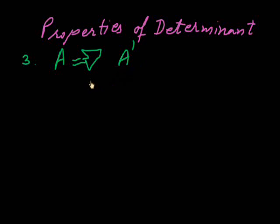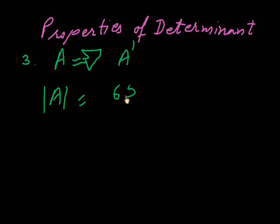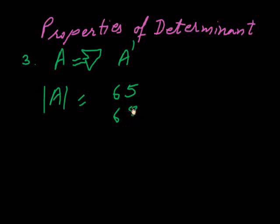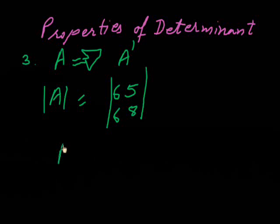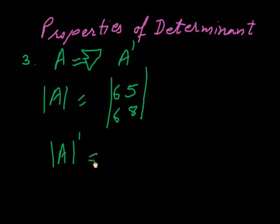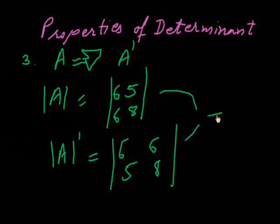the value of both determinants will be the same. Suppose a determinant is |6 5; 6 8|. If we calculate its transpose, the first row converts to column [6 6] and the second row converts to column [5 8]. Both values will be the same. We verify this.